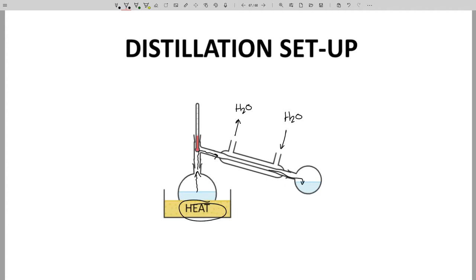The vapors do flow past a thermometer on their way to the condenser. Temperature changes in the thermometer allow one to determine the current boiling point of the material that is being collected.